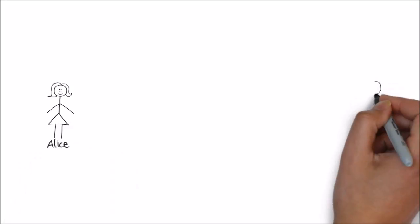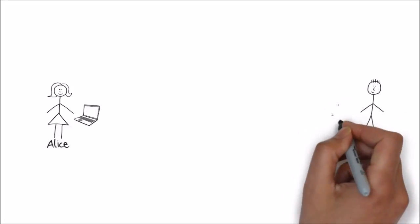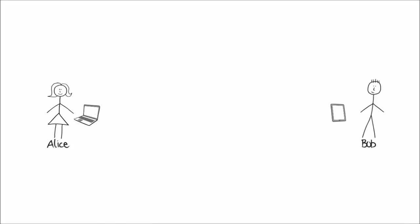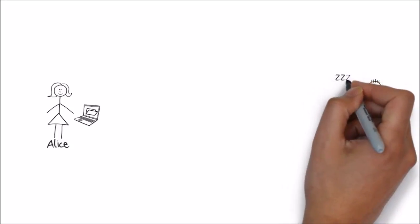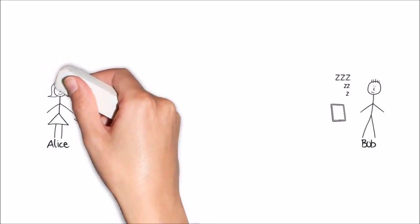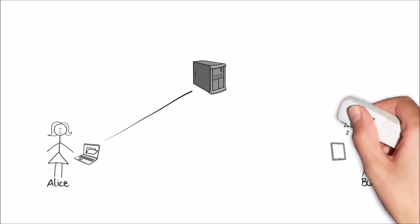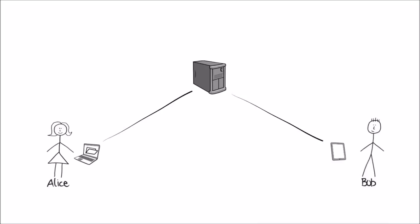Let's meet our friends Alice and Bob. Alice and Bob each have a device. Alice wants to share some files with Bob, but Bob is rarely online and Alice can't wait for Bob. So Alice can, for example, upload her files to a storage provider like Dropbox or Google Drive. When Bob comes back online, Bob can download Alice's files from the storage provider even when Alice is not online.